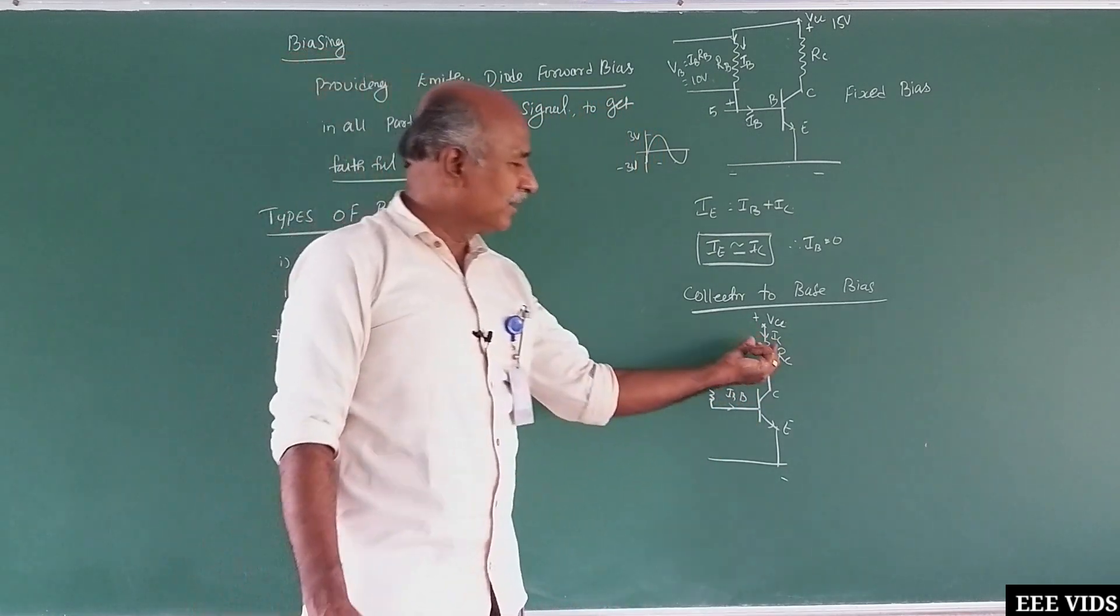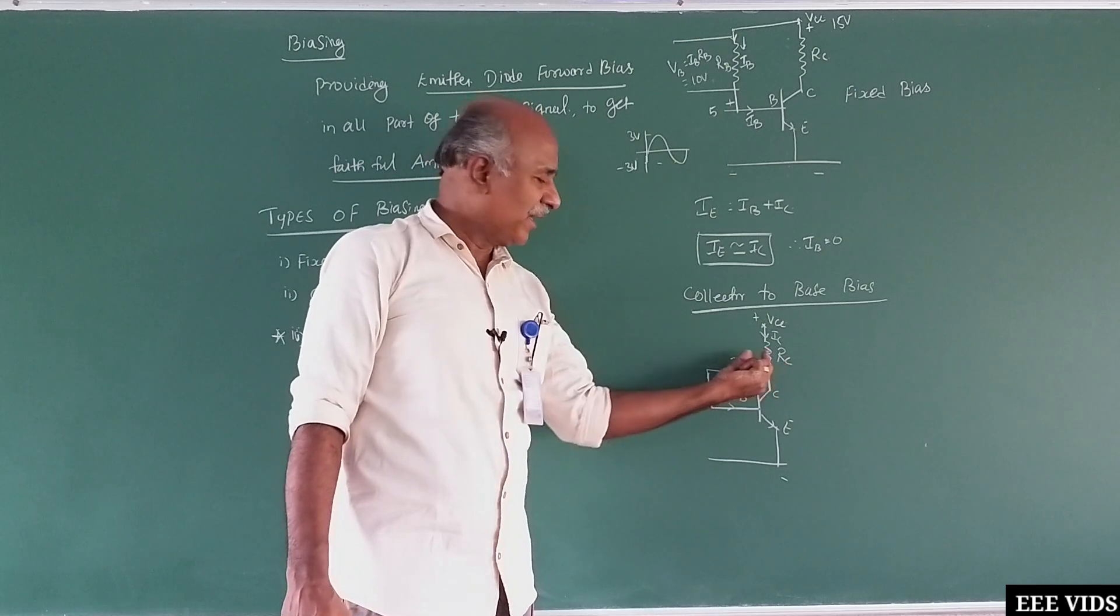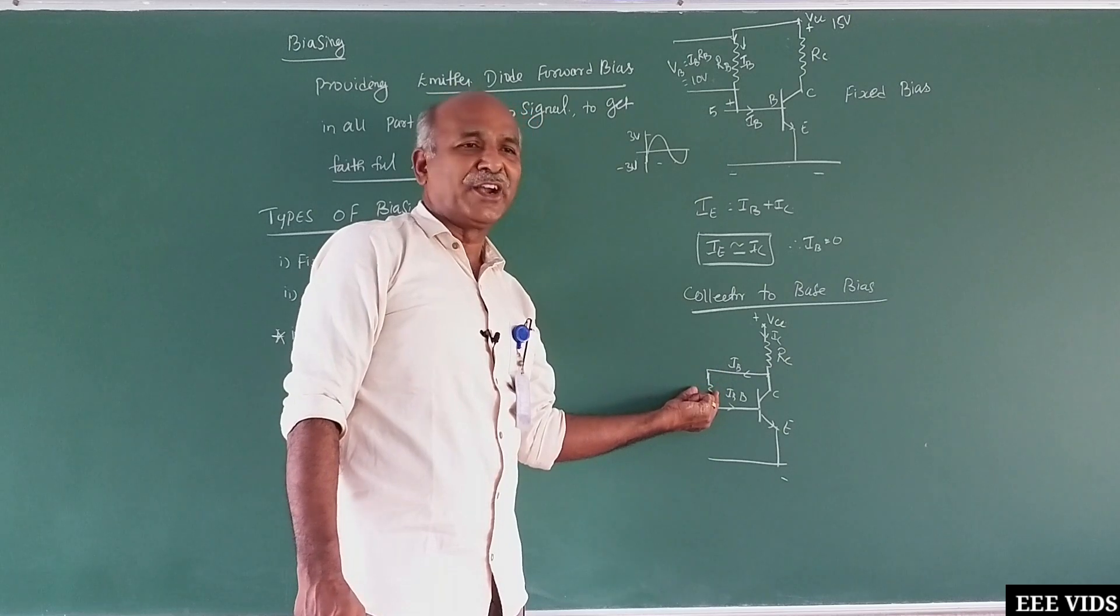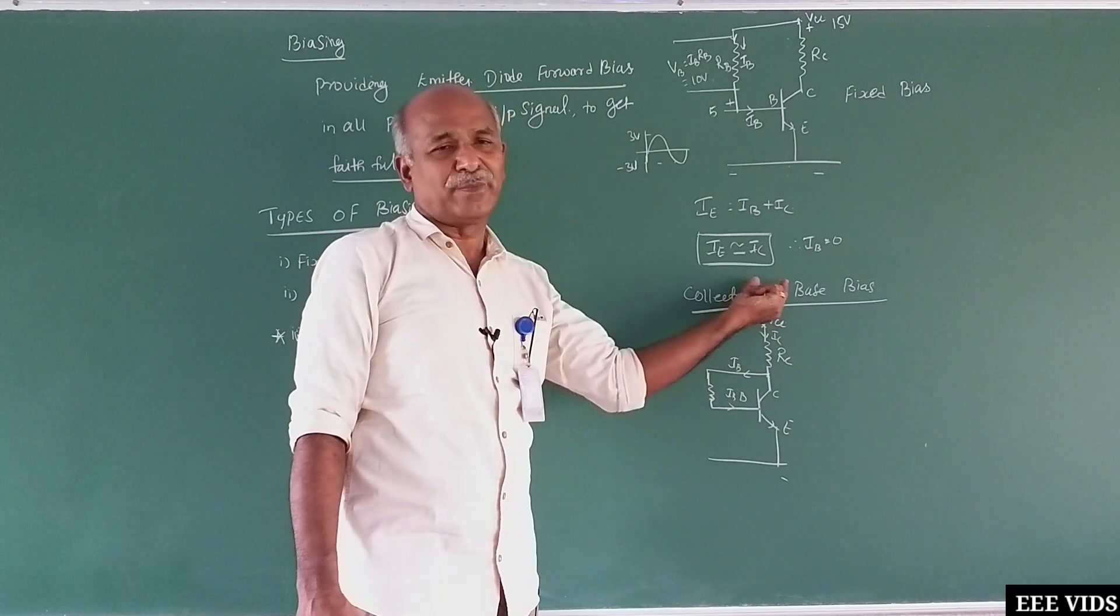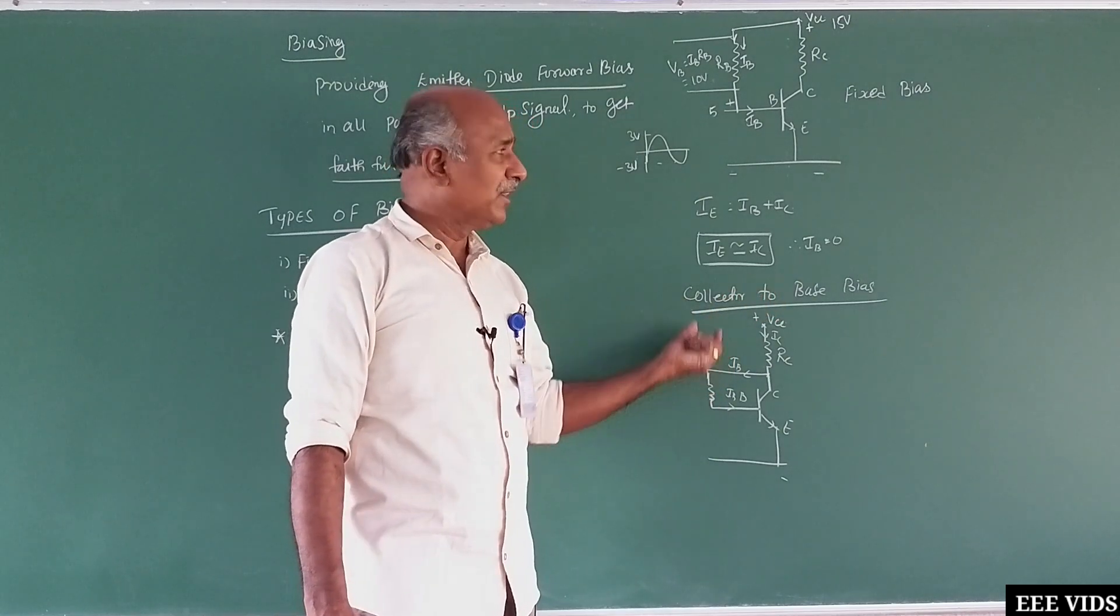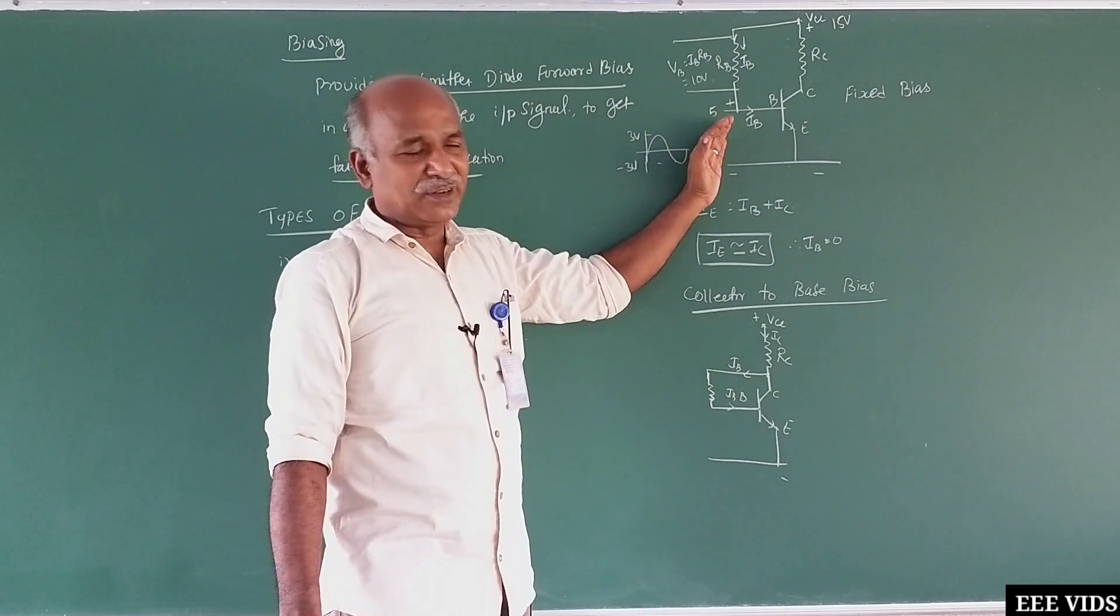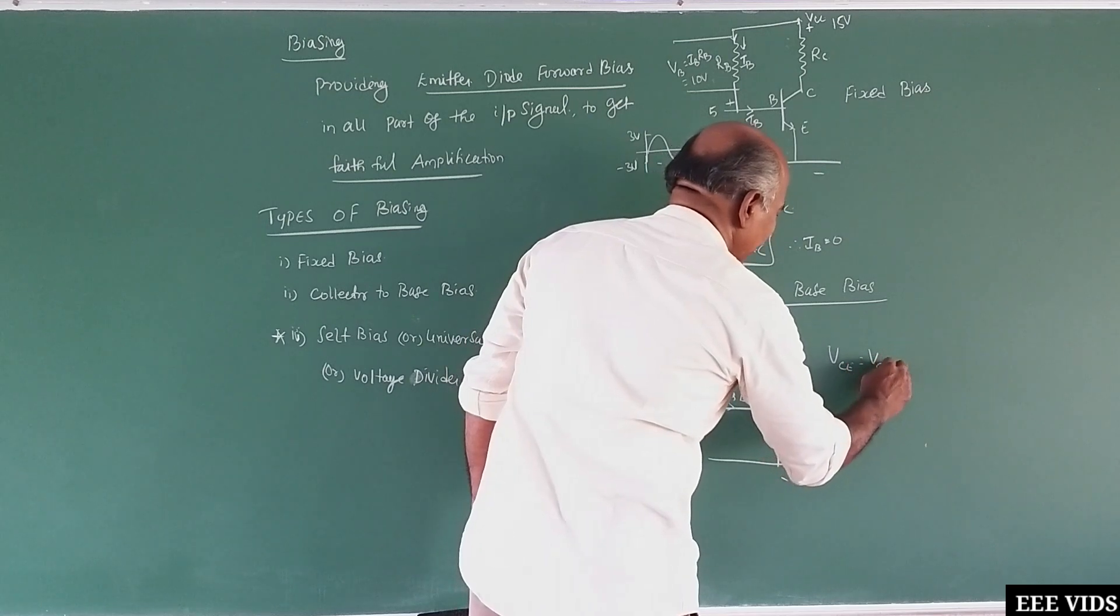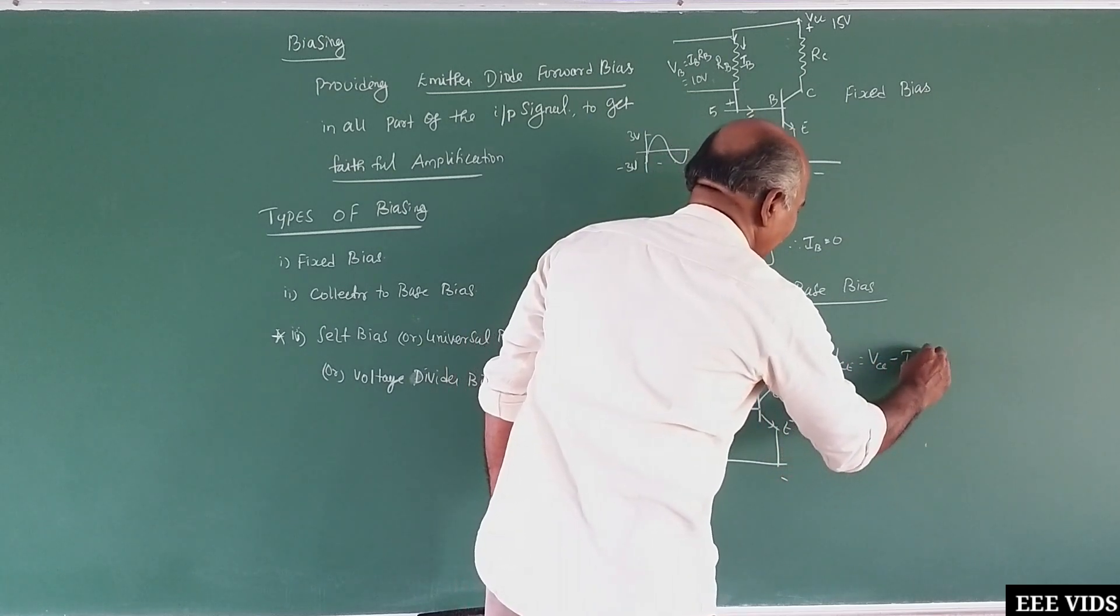In the voltage, the resistance is used. Here, drop is coming. Then in the resistance base, the value is coming. That is collector to base bias. Here, fixed bias is there. We already know VCE is equal to VCC minus ICRC.